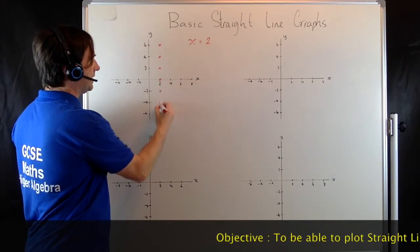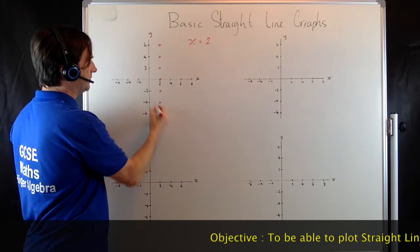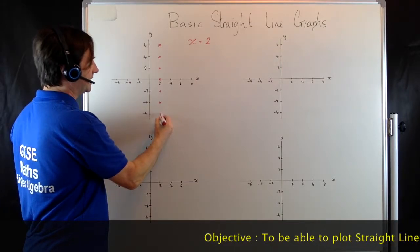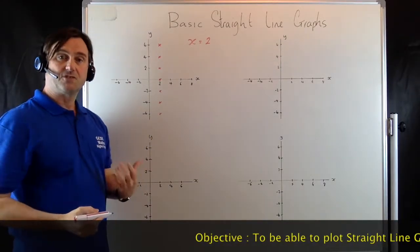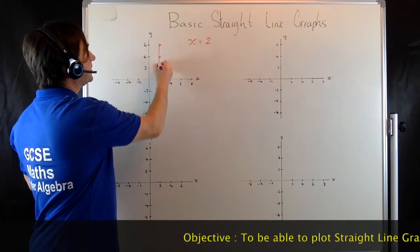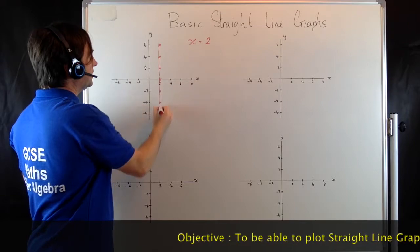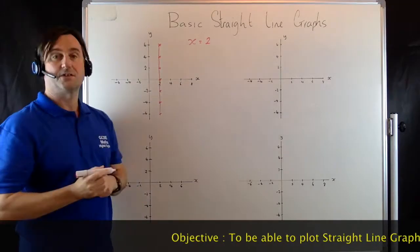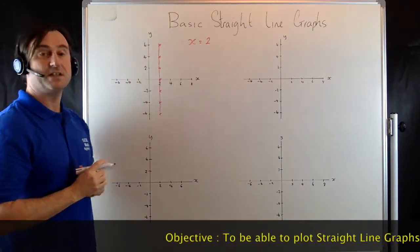Going down the page, when y is minus 4, x will equal 2. When y is minus 6, x will equal 2. So our graph is going to be a straight line vertically that cuts the x axis at 2. This is the graph of x equals 2.